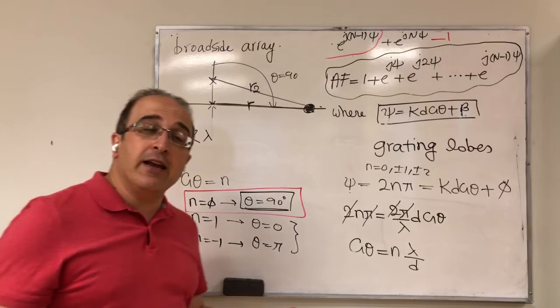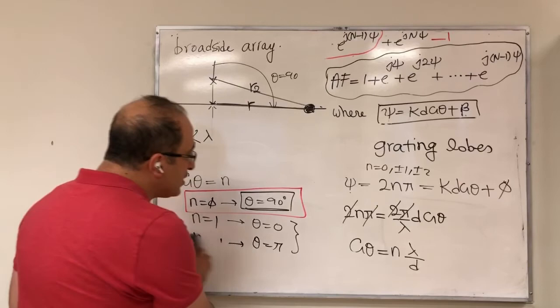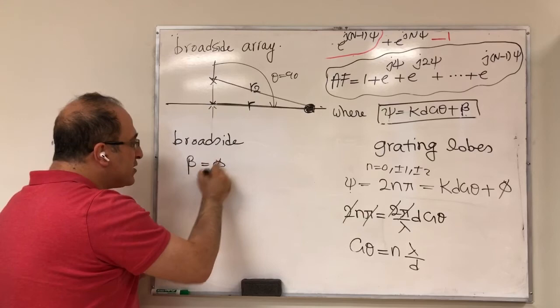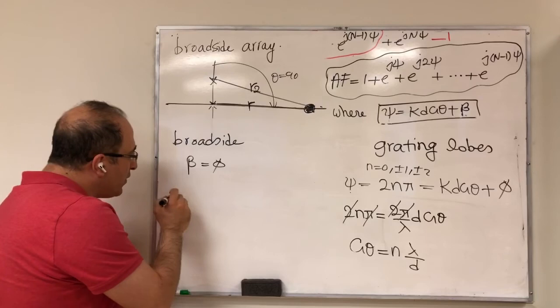To summarize the broadside array: set the phase difference between elements β = 0 (all elements in phase), and ensure the element separation d is less than one wavelength. These two conditions guarantee a broadside array factor with the main beam at θ = 90° and no grating lobes.